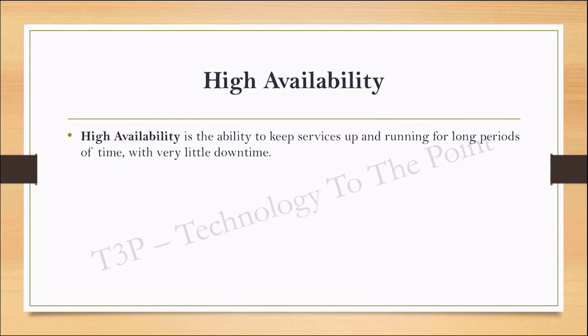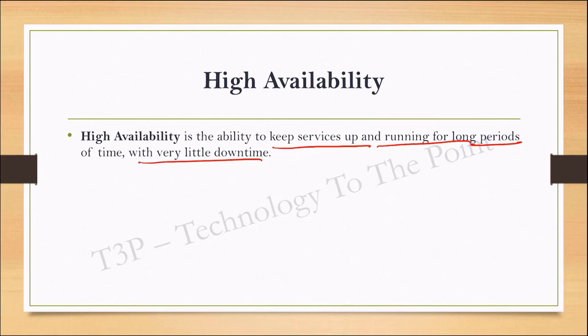High availability, defined in a single line, is the ability to keep your service up and running for a longer period of time with very little downtime. When we run our application, we always want it to run 100 percent — we want our application or services to be up and running all the time.